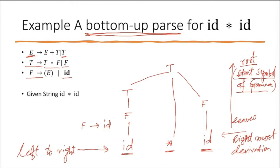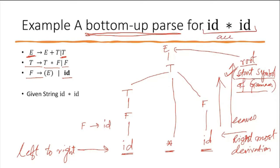We can see there is a rule T → T * F, which means T * F is reducible to T. We still haven't reached the start symbol, so we find that we can reduce this T using E → T. We started from the leaves, grew upward using left-to-right reading and rightmost derivations, and finally reached the root which is also the start symbol. At this point our parsing is successful and this string is accepted by the grammar.